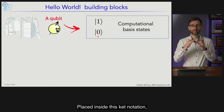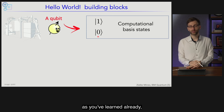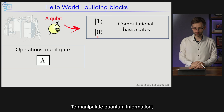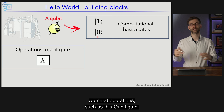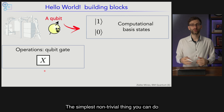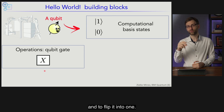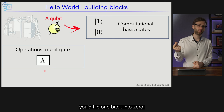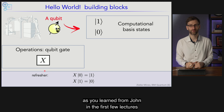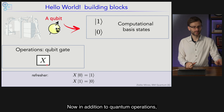At the level of today's lecture we'll abstract away all details of what the qubit is. All we need to know is that a qubit has two computational basis states, conventionally labeled as |0⟩ and |1⟩ placed inside ket notation — this vertical line with the little bracket — to denote that they are quantum states, not classical states. The simplest non-trivial thing you can do is flip the qubit from |0⟩ to |1⟩ and back again. This is the NOT gate or X gate. Simple and symmetric.